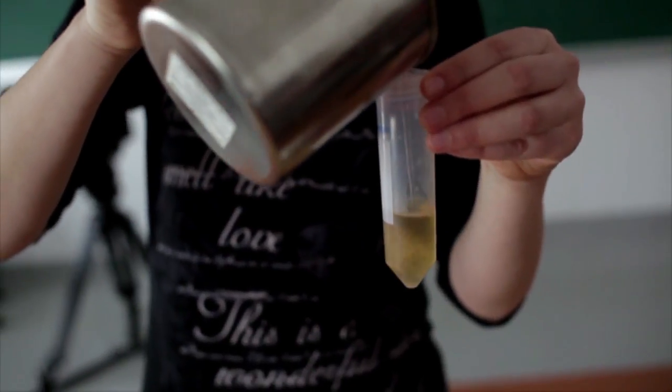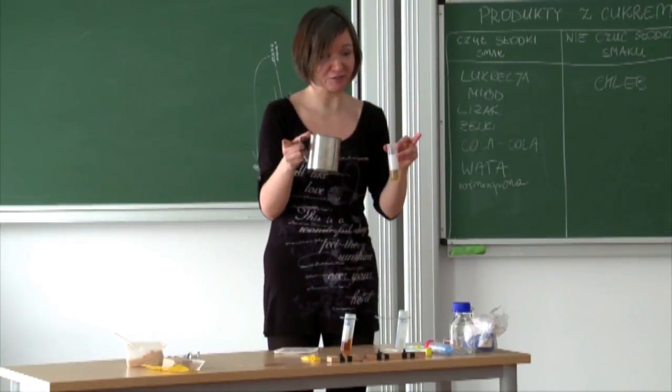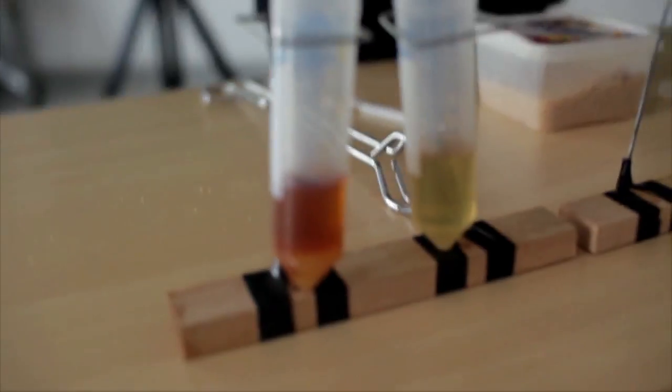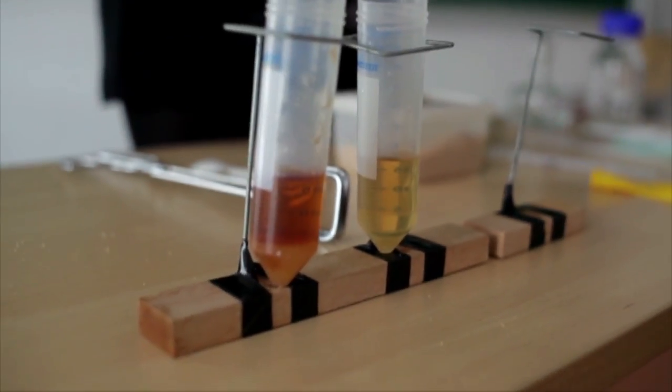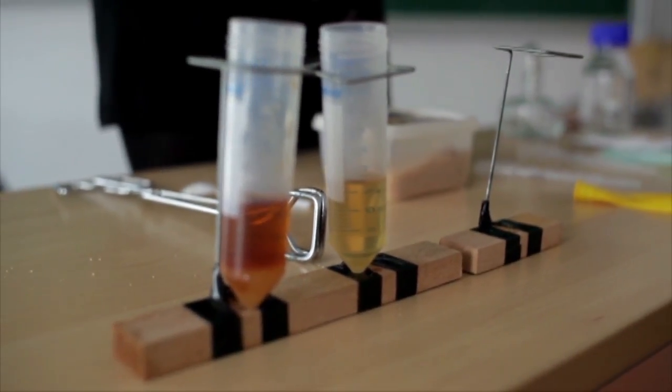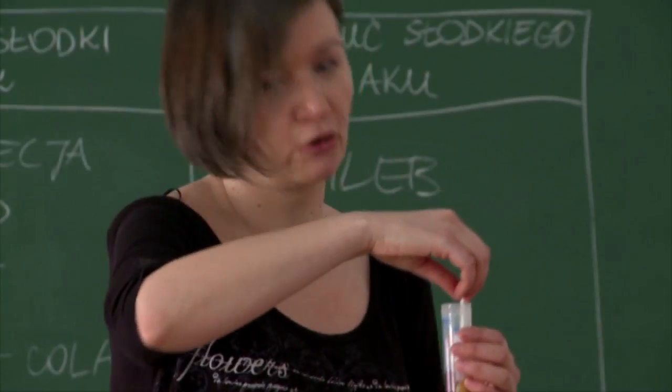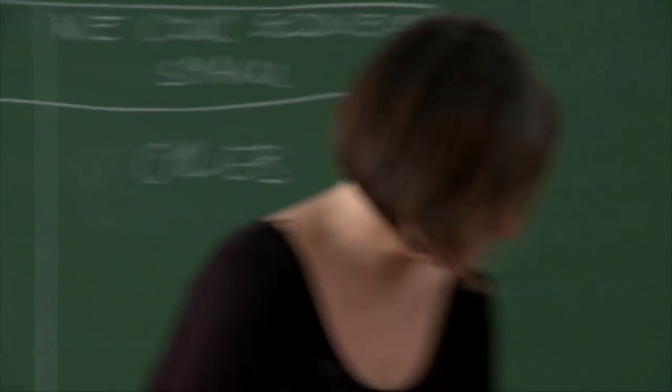Next, we pour the same amount of warm water into each container. We see at once that the liquid acquires a lighter or darker color depending on the amount of sugar. Then, we mix the solution in the containers with a stirrer so that the sugar dissolves.